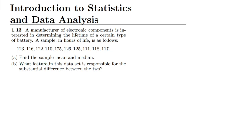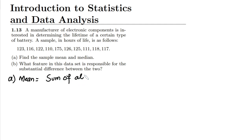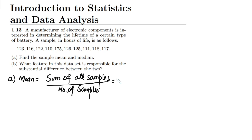What do we have to find out? We have to find the sample mean and median — that is Part A. So in Part A we have to find the sample mean and sample median. The mean is the sum of all samples divided by the number of samples. We have to add all the numbers which are here.